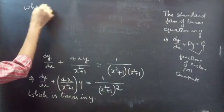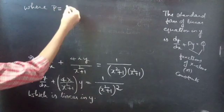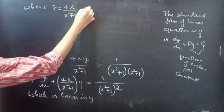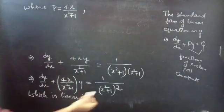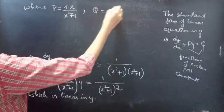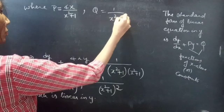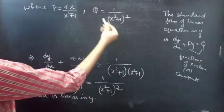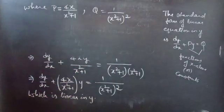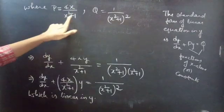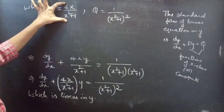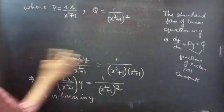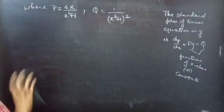By comparing these two, we get P and Q. P = 4x/(x² + 1), which is a function of x. And Q = 1/(x² + 1)². It does not involve any y or any other variable — it involves only the variable x. So we call it a function of x alone.